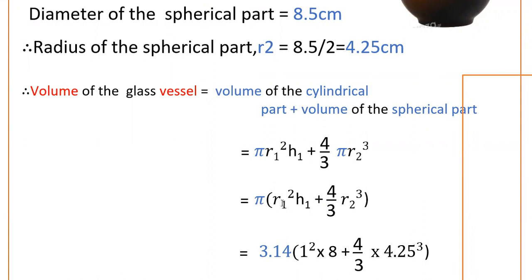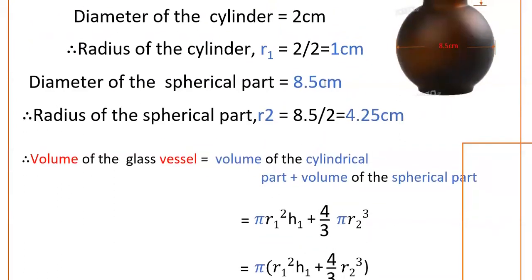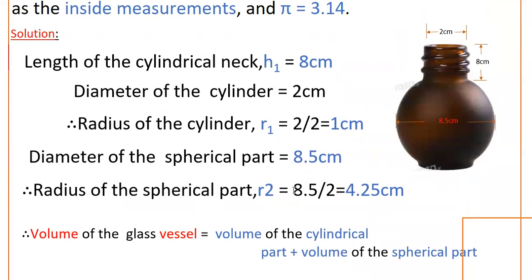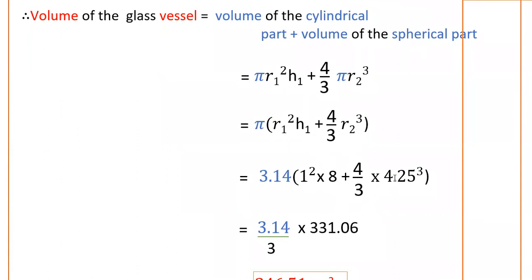Here π is common. So, π into r₁²h₁ plus 4/3 into r₂³. Now substitute the values: π value is given as 3.14 into r₁ is 1 and h₁ is 8 and r₂ is 4.25. So, 1² into 8 plus 4/3 into 4.25³.